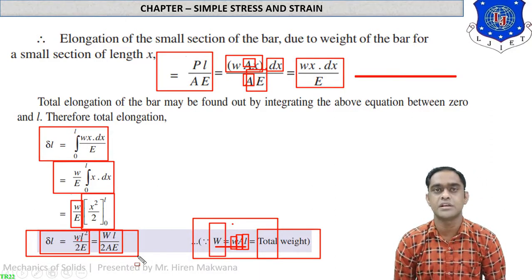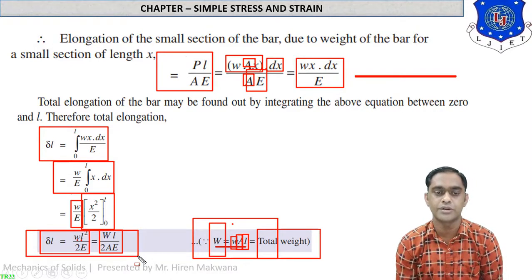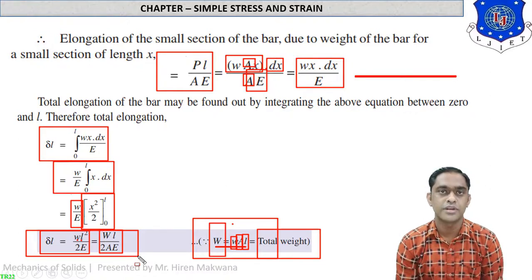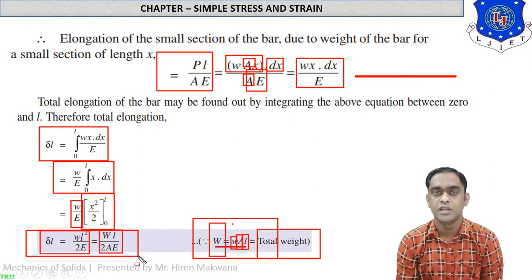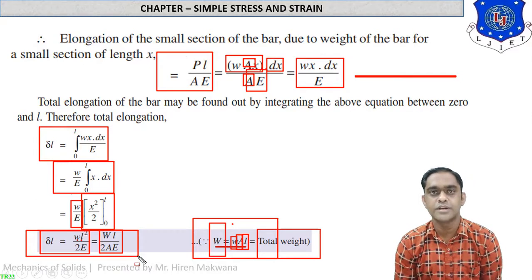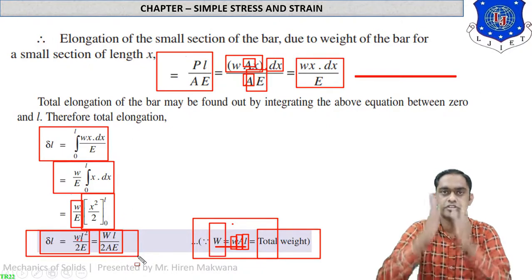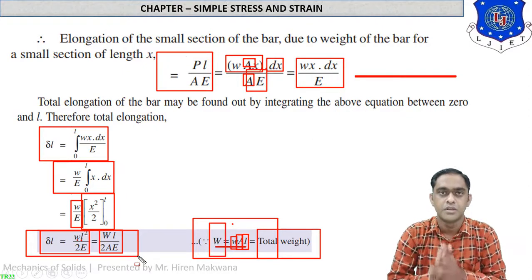Remember: while doing examples, all values must be in SI units. W is total weight in newtons, L is total length in mm, A is cross-sectional area in mm² (rectangular: length × width; circular: π/4 × d²), and E is modulus of elasticity in N/mm². This is case number one — body freely suspended from the top. In the second case, the body may be tapering circular or tapering rectangular.